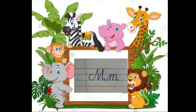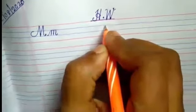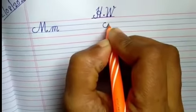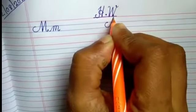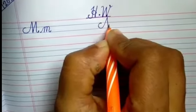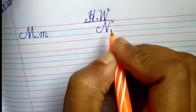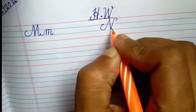Now we will write capital N. Put your pencil on line number 2. Again make a C like curve. Go to line number 1. Come back to line number 3. Come back to line number 1. This is capital N.